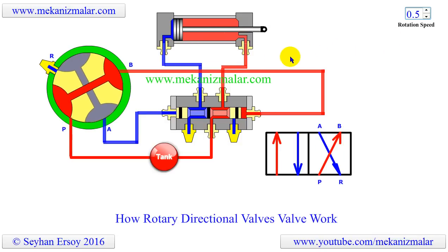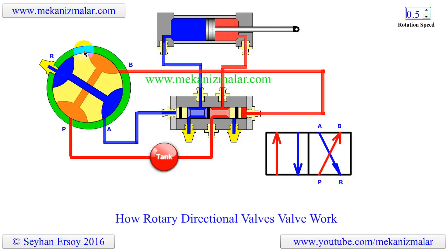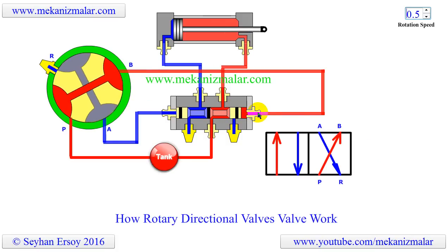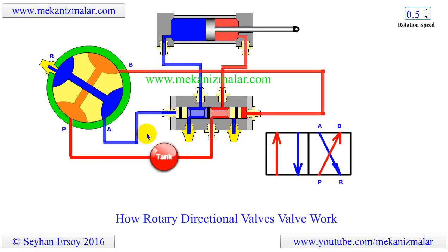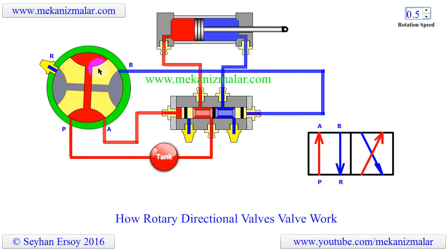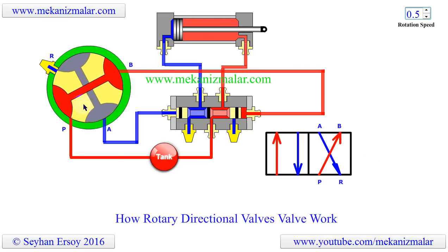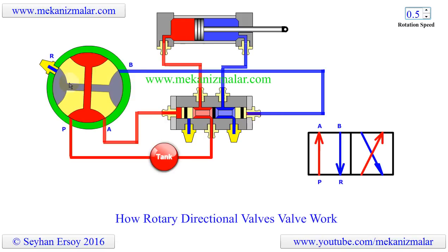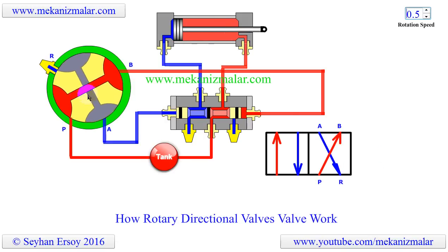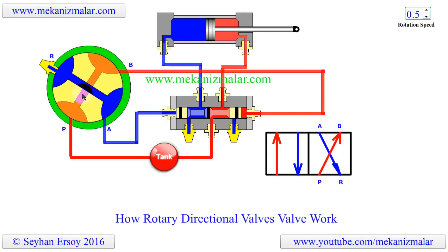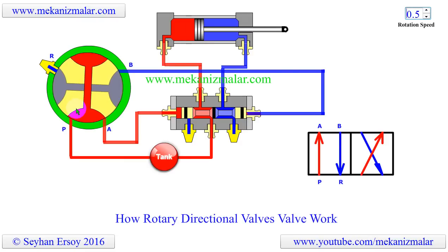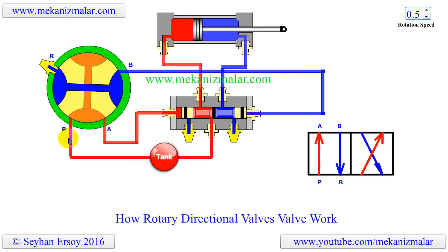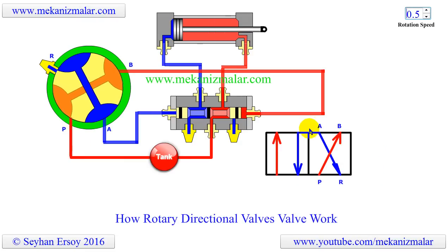Here, a 4-port 4-way rotary directional valve controls the pilot ports of the 5-port 4-way air-to-air valve. The spool of this valve has 4 grooves 90 degrees apart. There are two holes connecting two grooves on the opposite side of the spool. These two holes are at different depths, so they do not have any connection to each other. This rotary valve can be considered as a 4-port 4-way valve, and its symbol is shown here.